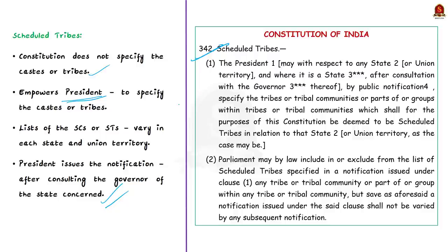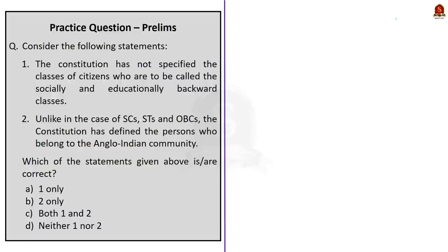In the case of states, the President issues notification of the list of scheduled tribes after consulting the governor of the state. However, any inclusion or exclusion of castes or tribes from the presidential notification can be done only by Parliament, not by a subsequent presidential notification. You have to remember Article 342, which empowers the President to specify scheduled tribes in various states and union territories. The order made by the President specifying scheduled tribes is called the Constitution Scheduled Tribes Order, initially notified in 1950. The 2022 bill aims to amend this Constitution Scheduled Tribes Order of 1950, as per clause 1 of Article 342.